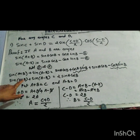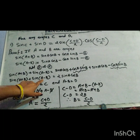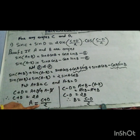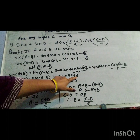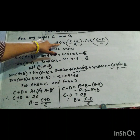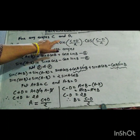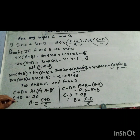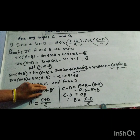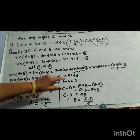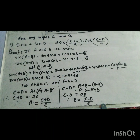Now put A plus B equal to C and A minus B equal to D, and A equal to C plus D upon 2 and B equal to C minus D upon 2. Put A plus B equal to C, A minus B equal to D, A equal to C plus D upon 2 and B equal to C minus D upon 2.